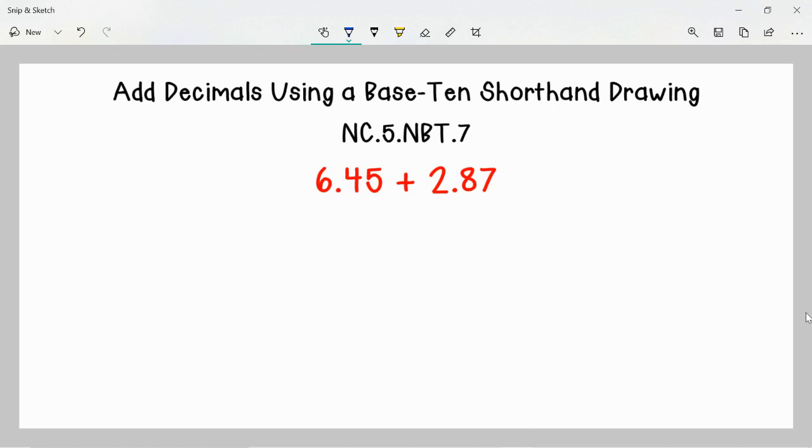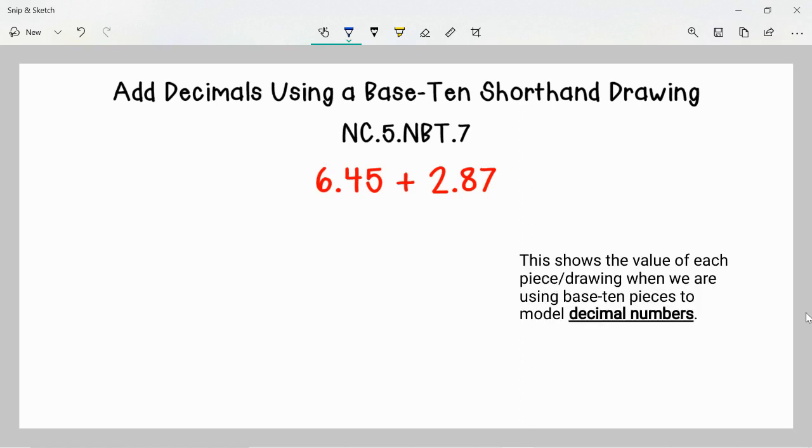Before we begin, let's review the Base-10 shorthand drawing. When we draw a square like this, we are representing one whole. When we draw a rod like that, we are representing one-tenth. And when we draw a dot like this, we are representing one-hundredth.